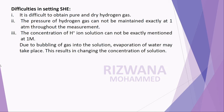There are several difficulties in setting up the standard hydrogen electrode: it is difficult to obtain pure and dry hydrogen gas; the pressure of hydrogen gas cannot be maintained exactly at one atmosphere throughout the measurement; the concentration of the H⁺ ion solution cannot be exactly maintained at one mole due to the bubbling of gas. Evaporation of water may also change the concentration of the solution.